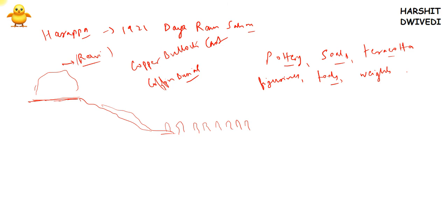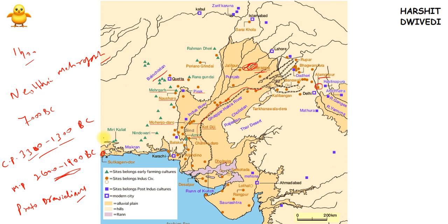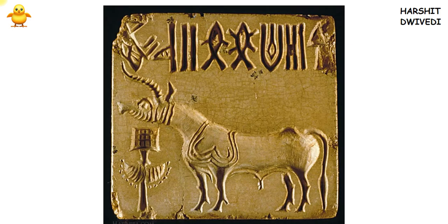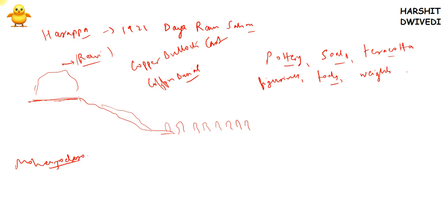The next site is Mohenjo-daro, founded in 1922 by R.D. Banerji. Mohenjo-daro is very near to the Indus River — also known as the Sindh River — and is located in Pakistan, specifically in the Larkana district.